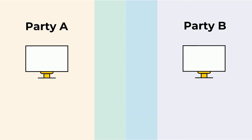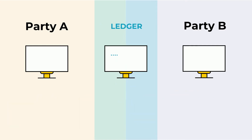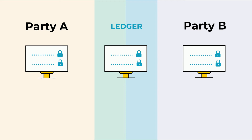Picture a ledger as a central spreadsheet where a new row is entered for each transaction. The row is tagged with an encrypted hash. That spreadsheet is then replicated for each permissioned party to access in real time.